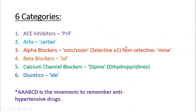There are six categories we have to know, and an easy mnemonic for remembering them is A, A, B, C, D — that is ACE inhibitors, ARBs (angiotensin-2 receptor blockers), alpha blockers, beta blockers, calcium channel blockers, and diuretics. An easy way to remember this is by the suffixes: ACE inhibitors end in -PRIL, ARBs end in -SARTAN, alpha blockers end in -OSIN or -ZOSIN (selective alpha-1 blockers used in hypertension), beta blockers end in -LOL, calcium channel blockers are dihydropyridines (important in hypertension), and diuretics.